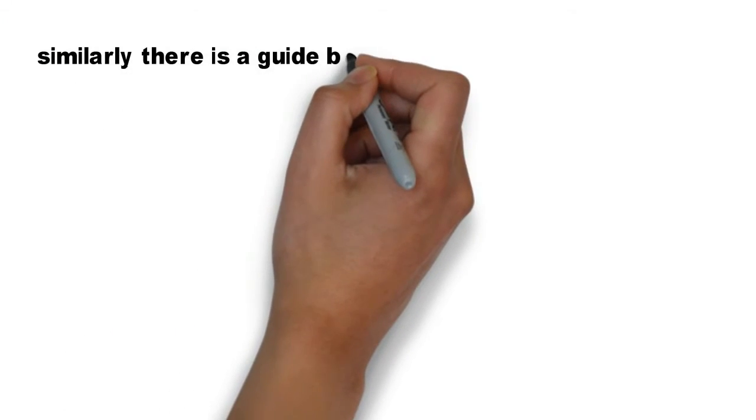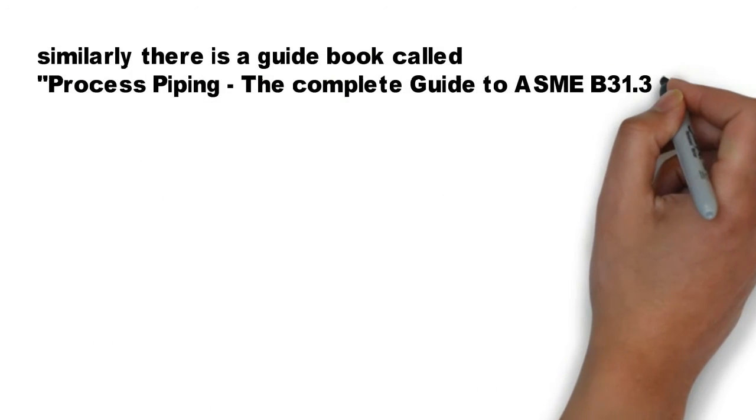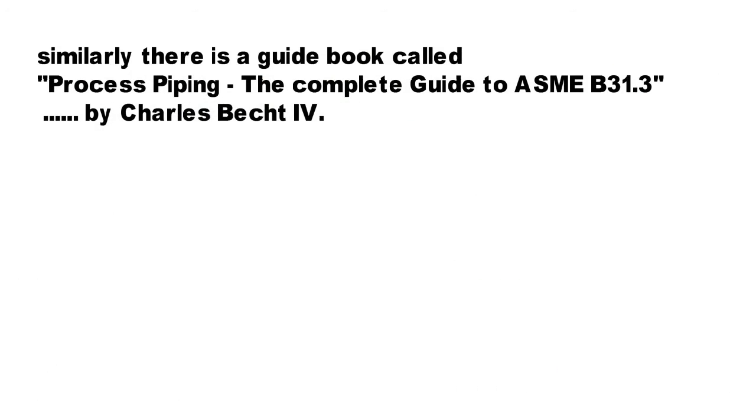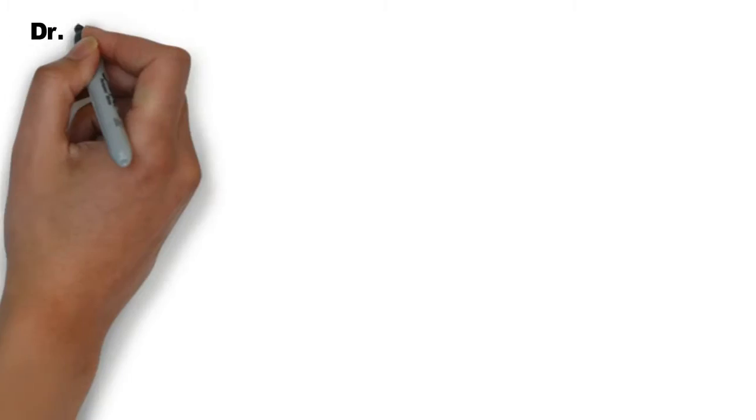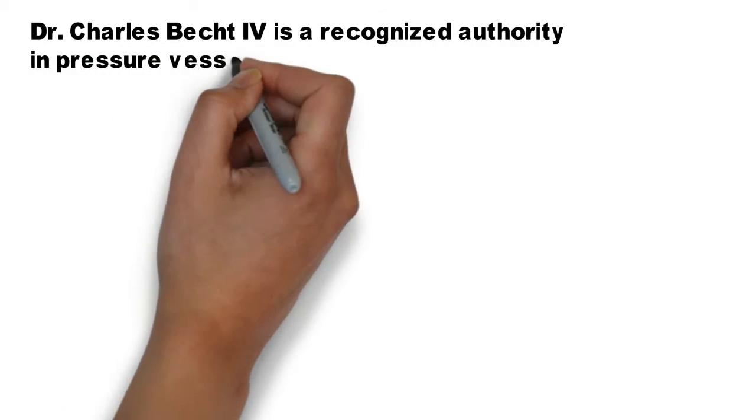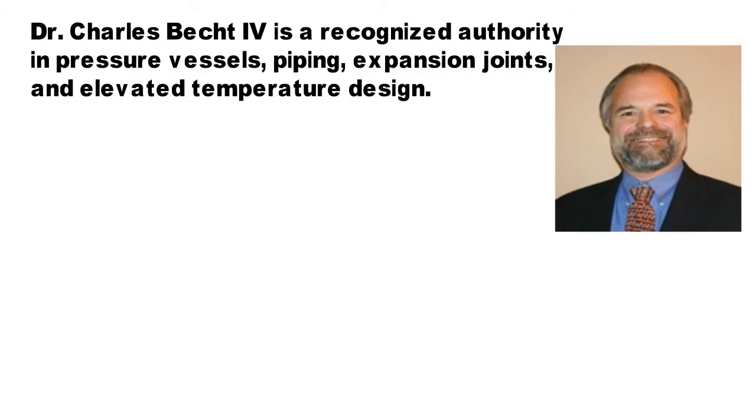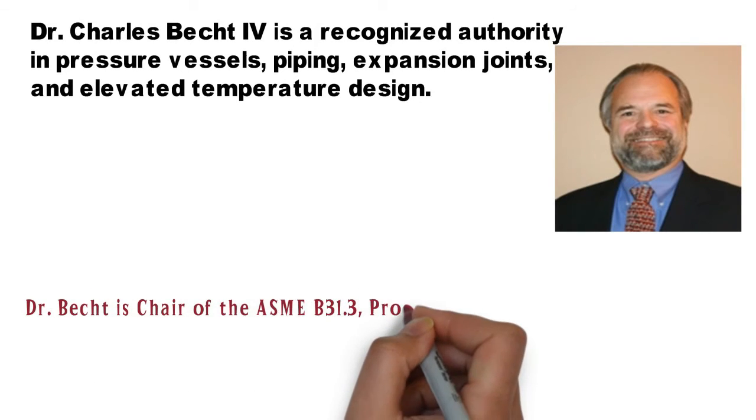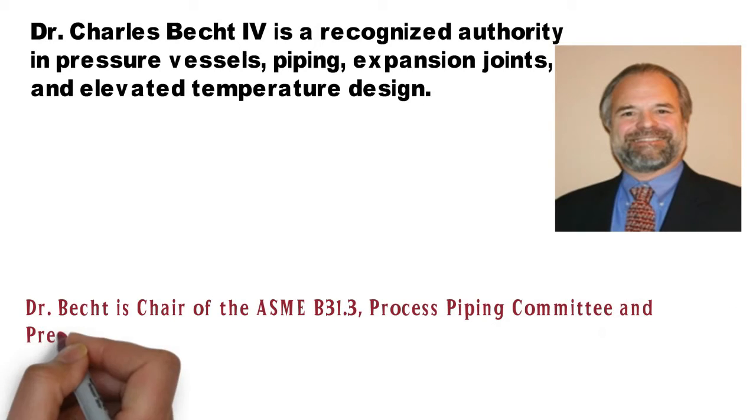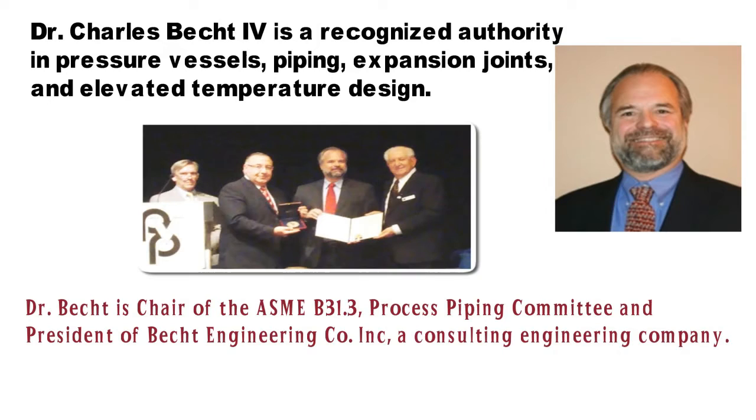There is a guidebook called Process Piping The Complete Guide to ASME B31.3, written by Charles Becht IV. So this is a guidebook to the ASME B31.3. Dr. Charles Becht IV is a recognized authority in pressure vessels, piping expansion joints and elevated temperature design. Dr. Becht is chair of the ASME B31.3 Process Piping Committee and president of Becht Engineering Company Inc., a consulting engineering company.